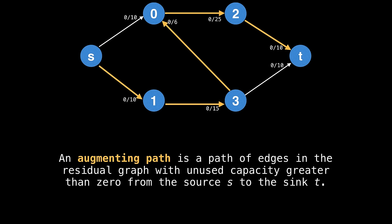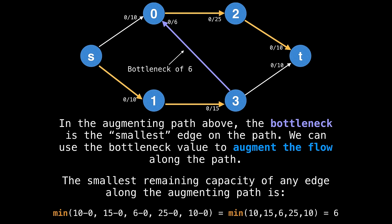How to actually find an augmenting path is a detail left unspecified by the Ford Fulkerson method for flexibility. For now, let's assume that we're using a depth first search. Something else to know is that every augmenting path will have what I call a bottleneck value, which is the smallest edge along the path, you can find the value of the bottleneck by taking the difference between the capacity and the current flow of an edge.